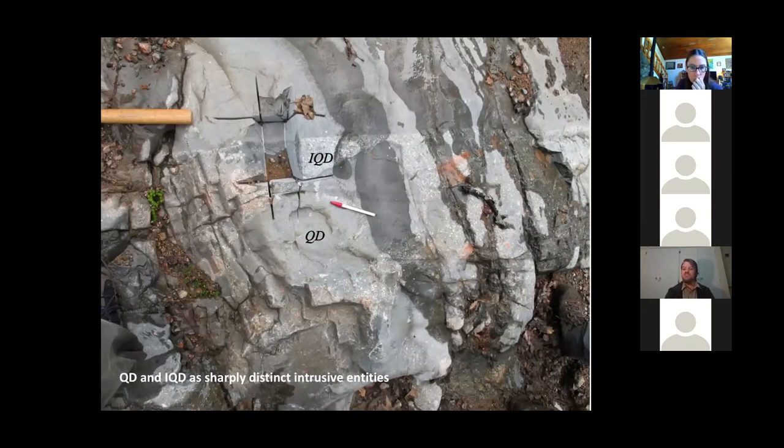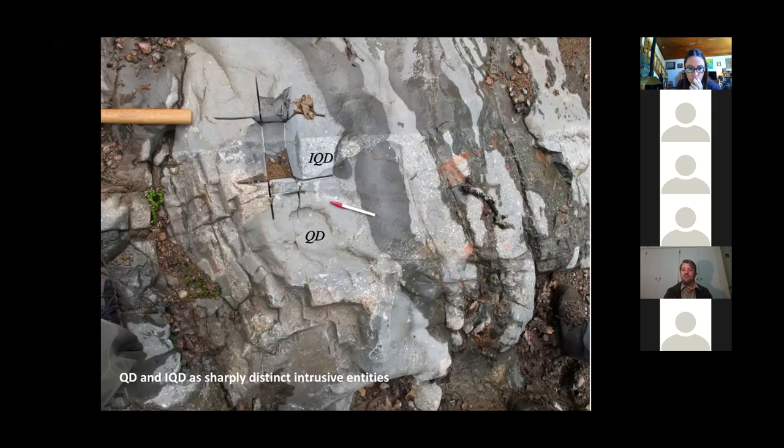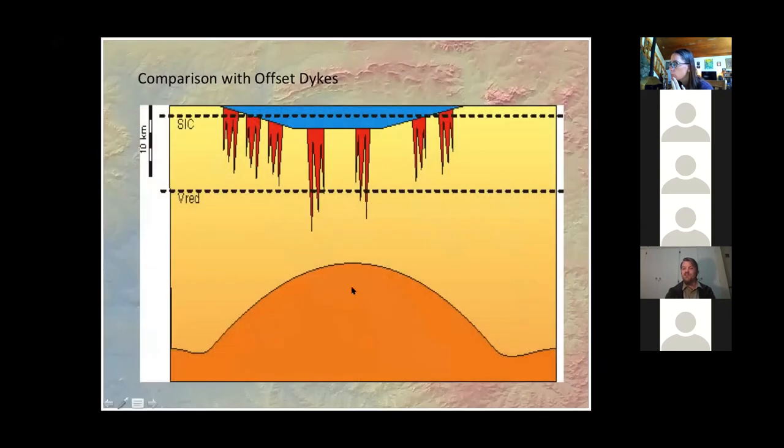This is very reminiscent of the Sudbury example where we have the quartz bearing diorite and the inclusion bearing quartz diorite. It begins to look like maybe what we have is two different cuts of the same melt dike system, that we have the Sudbury offset type dikes preserved at Sudbury and deep inside the crust, we have the Vredefort system where Vredefort is preserving the very bottom of this type of system.